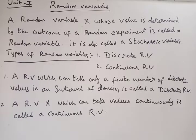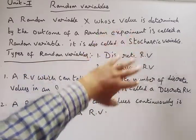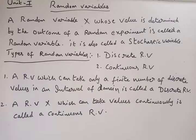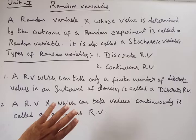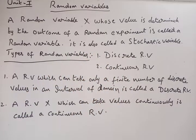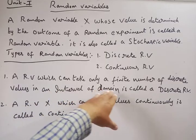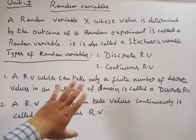What are the types of random variables? We have two types. One is discrete random variable and the second is continuous random variable. A discrete random variable is one which can take only a finite number of discrete values in an interval of domain. It can be countable, finite — not infinite values.